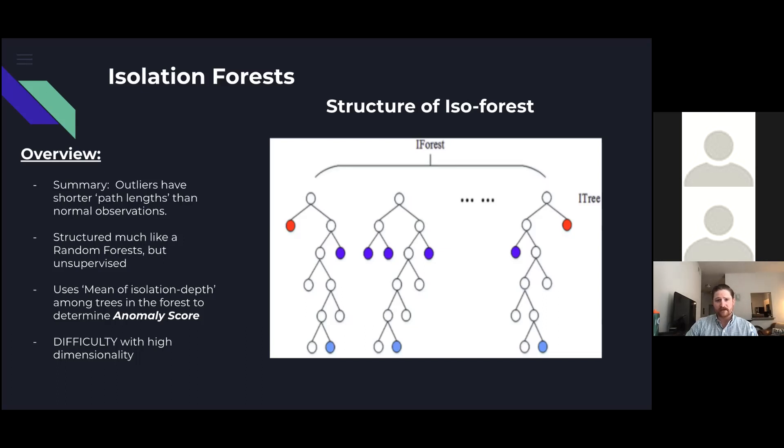When a value is isolated, it is given a score dependent upon the depth to which it was isolated. It is then compared against the score from all the other trees in the forest to find a mean that determines the final score. One thing to note: isolation forests have a huge problem dealing with high dimensionality.